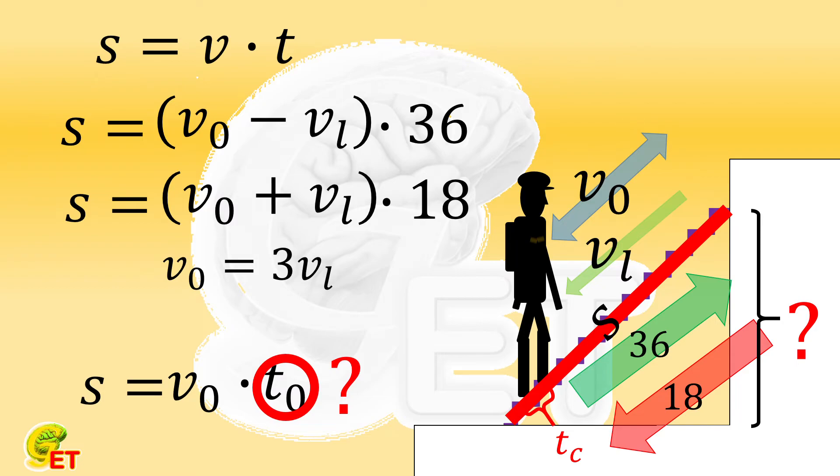For example, in the case of choosing the upward situation, we have three times the escalator speed times the number of steps asked equals twice the escalator speed times 36. The answer is 24.